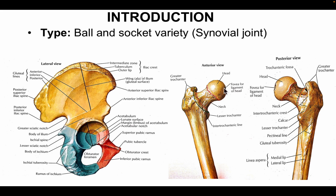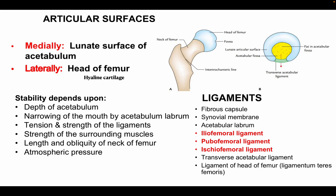The head has a pit known as the fovea capitis. Regarding the articular surface: medially it articulates with the lunate surface of the acetabulum, and laterally it articulates with the head of the femur, which is covered with hyaline cartilage. The stability of the hip joint depends upon the depth of the acetabulum, narrowing of the mouth of the acetabulum, the labrum, tension and strength of the surrounding ligaments, strength of surrounding muscles, and the length and oblique pattern of the neck of the femur, as well as atmospheric pressure.